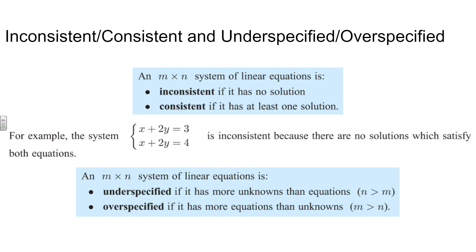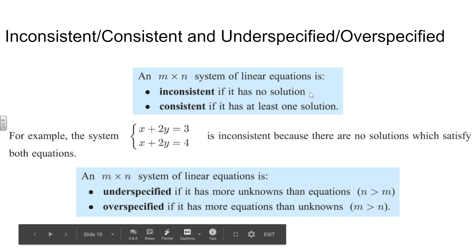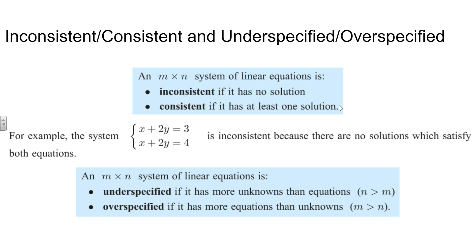Now we want to classify the systems that we have here, and we classify them two ways. We classify them first whether they're inconsistent or consistent. Inconsistent implies that there's no solution. Consistent implies that there's at least one solution. Maybe there's infinitely many, but we're saying it's going to be having at least one solution.